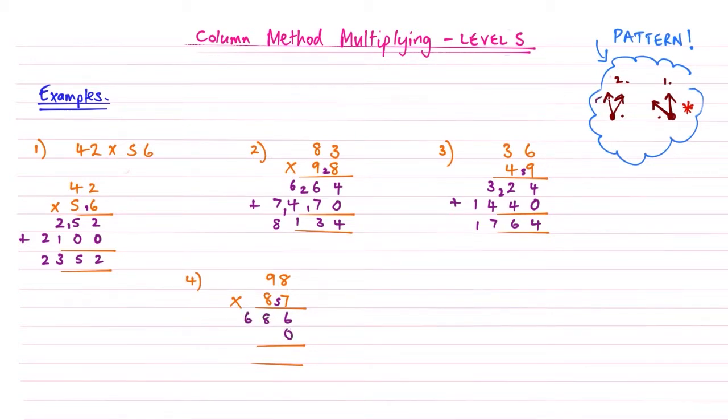Adding the 0 for the second part. 8 times 8 is 64, writing small 6. Then 8 times 9 is 72, add that 6, becomes 78. Now we add these together. 6 add nothing is 6. 8 add 4 becomes 12, writing a little 1 to carry. Some write it underneath, you can do either. 6 add 8 is 14, add that 1, becomes 15. Then 7 add 1 is 8.